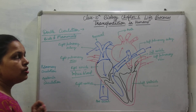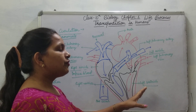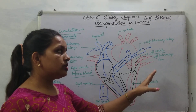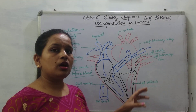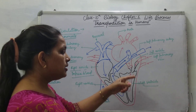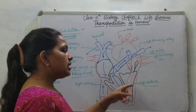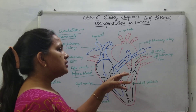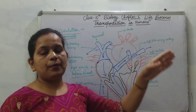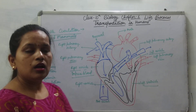Next is systemic circulation. In systemic circulation, the left auricle and left ventricle are involved to receive pure blood from the lungs. The left ventricle sends this blood to the aorta, where blood goes to the different parts of the body.